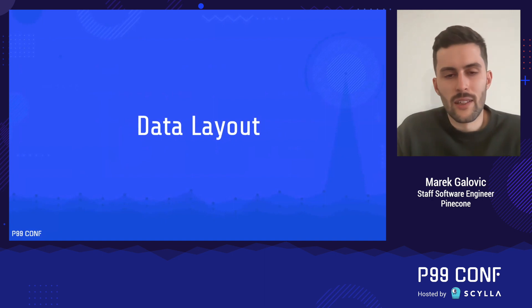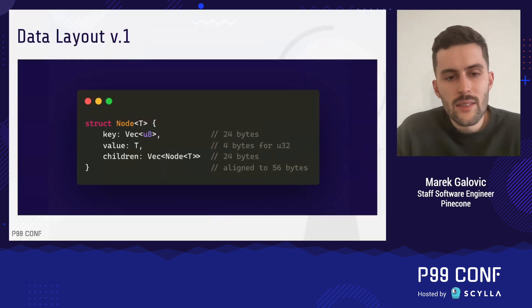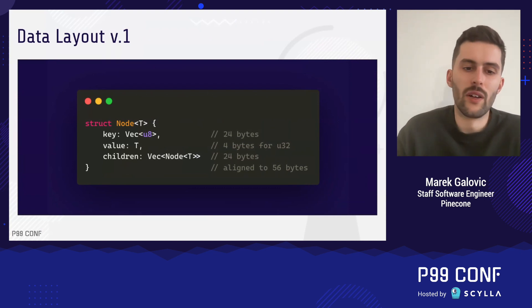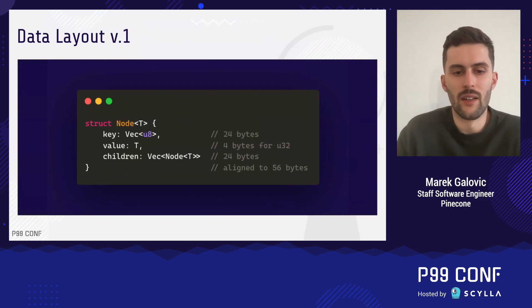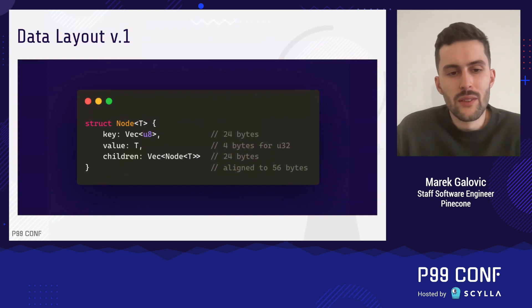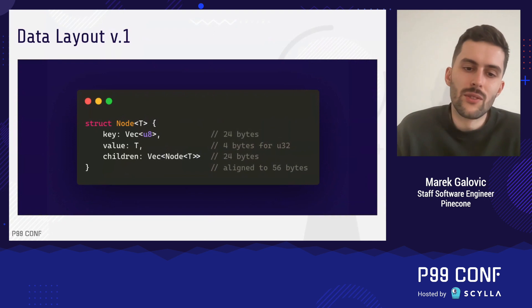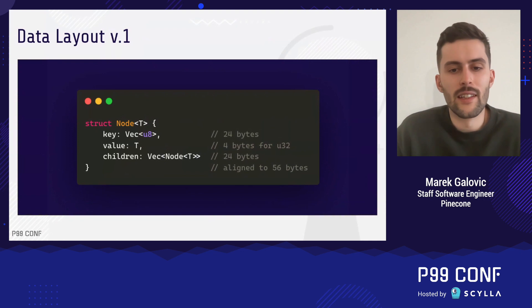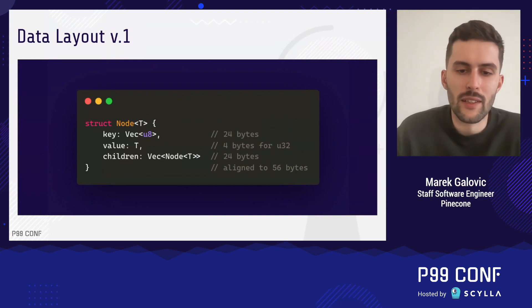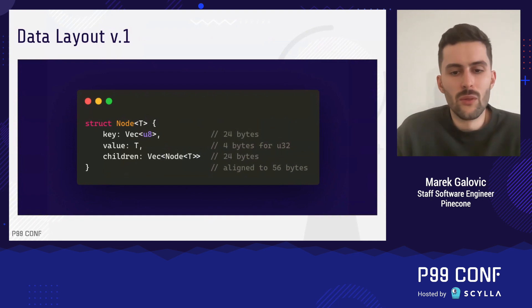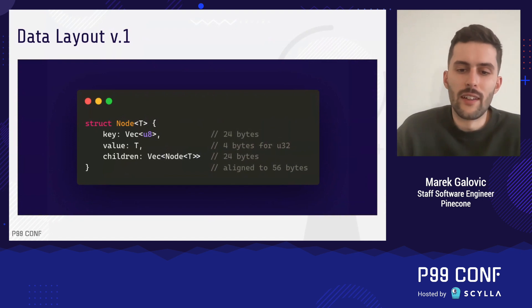In the last example, I would like to look at how we can implement custom data layouts for custom collections. Let's assume we are implementing a tree where each node has some key, some value, and some children which are also nodes of that tree. A naive approach would be to store the key as a vector of bytes, store the value as whatever the size of value is, and store children as a vector of nodes. Because the vector needs to store its length, capacity, and data pointer, its effective size is 24 bytes. Assuming the data is U32 at 4 bytes, and children is also a vector at 24 bytes, the aligned size of one single node in our tree is 56 bytes.